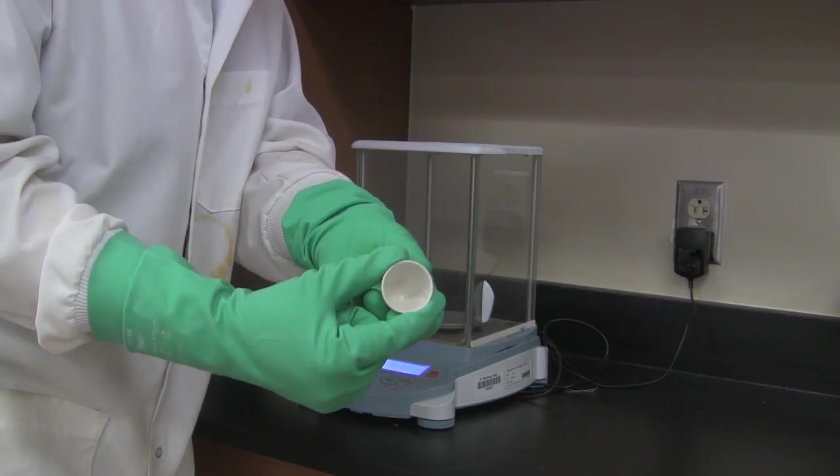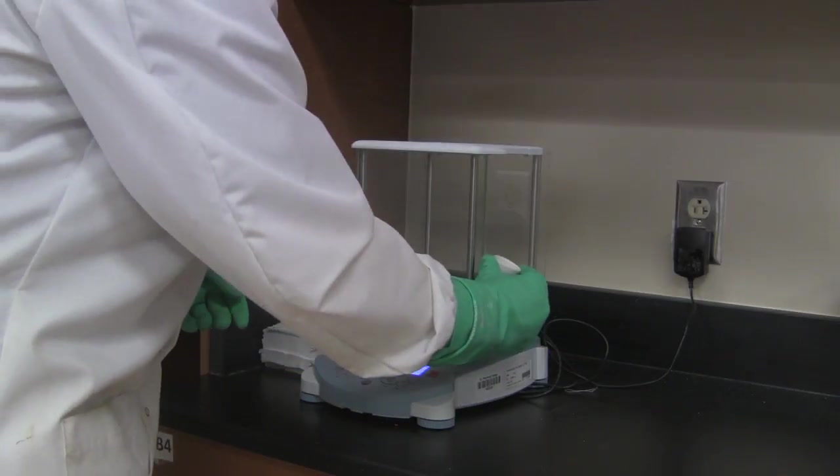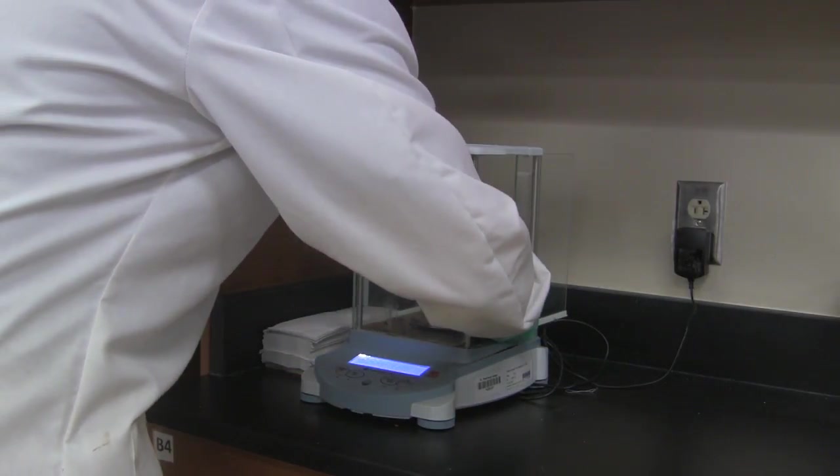What I'm going to do first is weigh this crucible empty. Notice I'm going to weigh it without the lid. I'm weighing it on an analytical balance, which means I'm weighing it to 0.0001 gram.